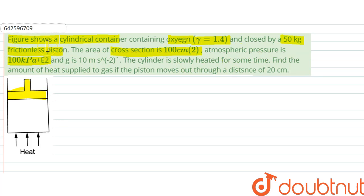The area of cross section is 100 centimeter square. Atmospheric pressure is 100 kilopascal plus mg, and g is 10 meter per second square. The cylinder is slowly heated for some time. Find the amount of heat supplied to the gas if piston moves out through a distance of 20 centimeter.